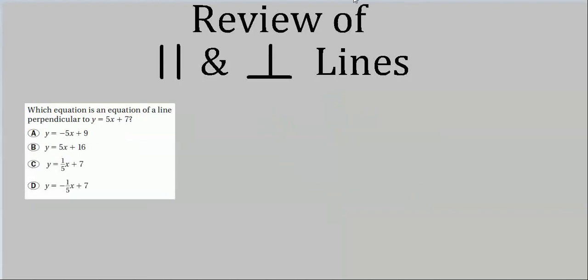Now we're working with perpendicular slopes. Which equation is a line perpendicular to y = 5x? The slope of y = 5x is 5. The slope of a perpendicular line is the negative reciprocal: −1/m, so −1/5 must be the slope. We find the answer choice with slope −1/5.